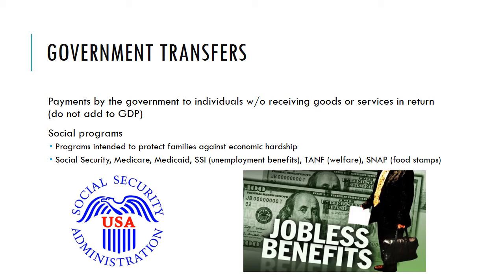Usually we're going to think of government social programs when we think of government transfers — these are programs intended to protect families against economic hardship. We have ones designed for elderly people, like Social Security and Medicare, to make sure we don't have a lot of poor elderly people in this country. On the other hand, we also have ones to help people who don't have very much money or are jobless: unemployment benefits, SSI (Supplemental Security Income), Medicaid, welfare which is actually called TANF (Temporary Assistance for Needy Families), and food stamps, which is SNAP (Supplemental Nutrition Assistance Program). These are all giving money to people and the government doesn't receive anything in exchange — that is part of fiscal policy but it doesn't count for GDP.